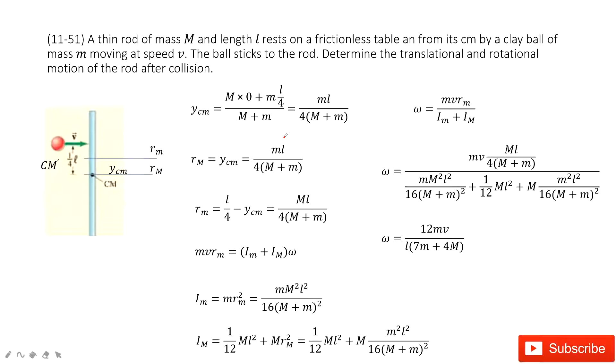Chapter 11 is about angular momentum. In this one, you can see we have this system, a thin rod, the mass and the length is given.